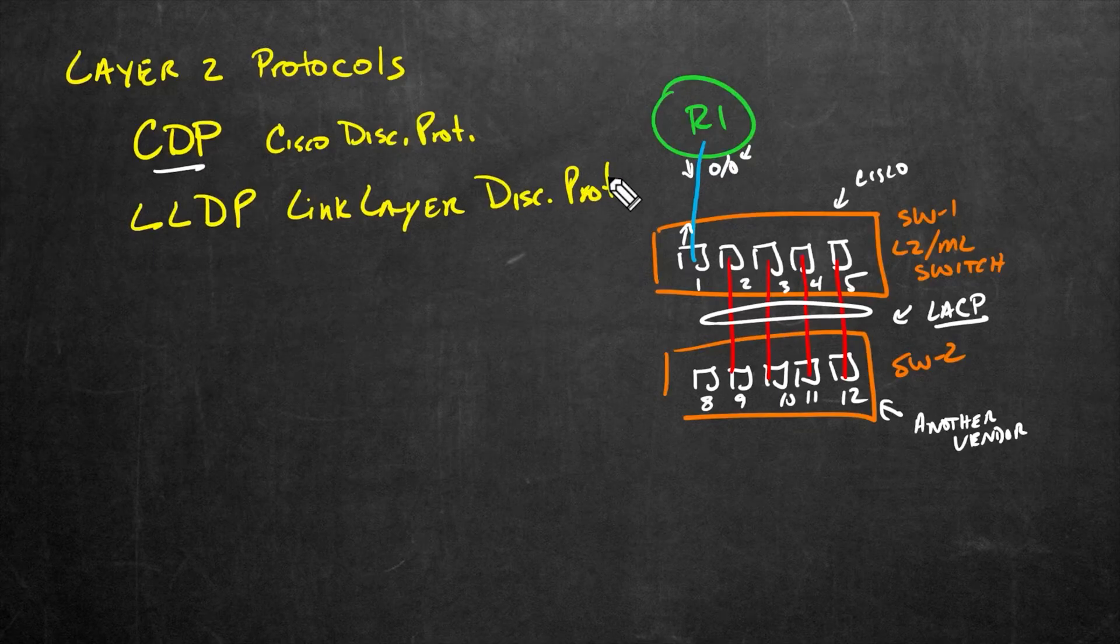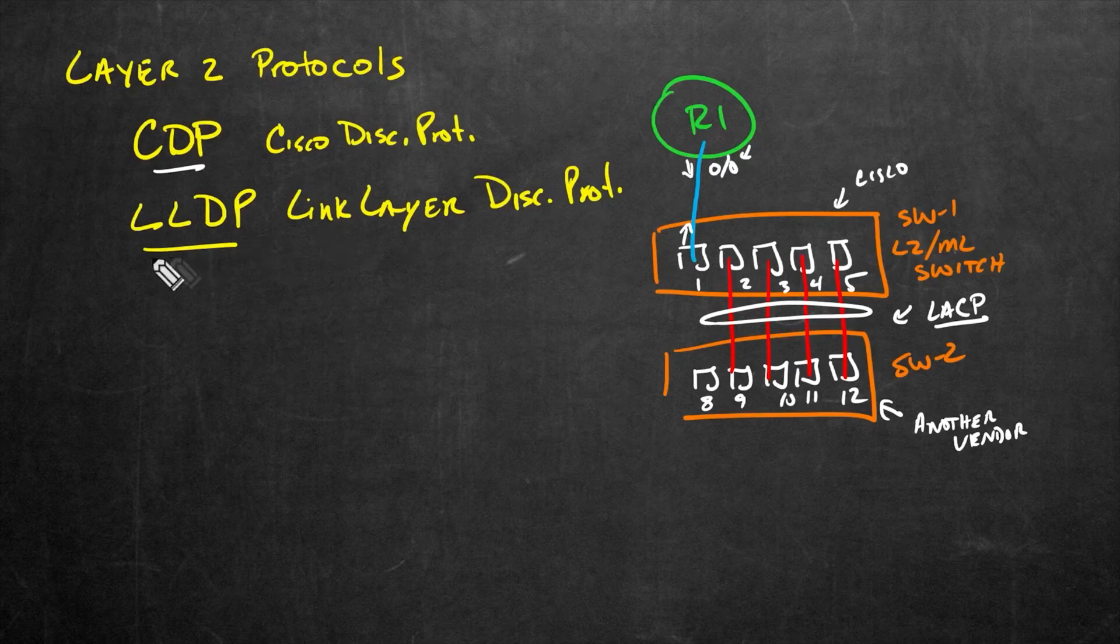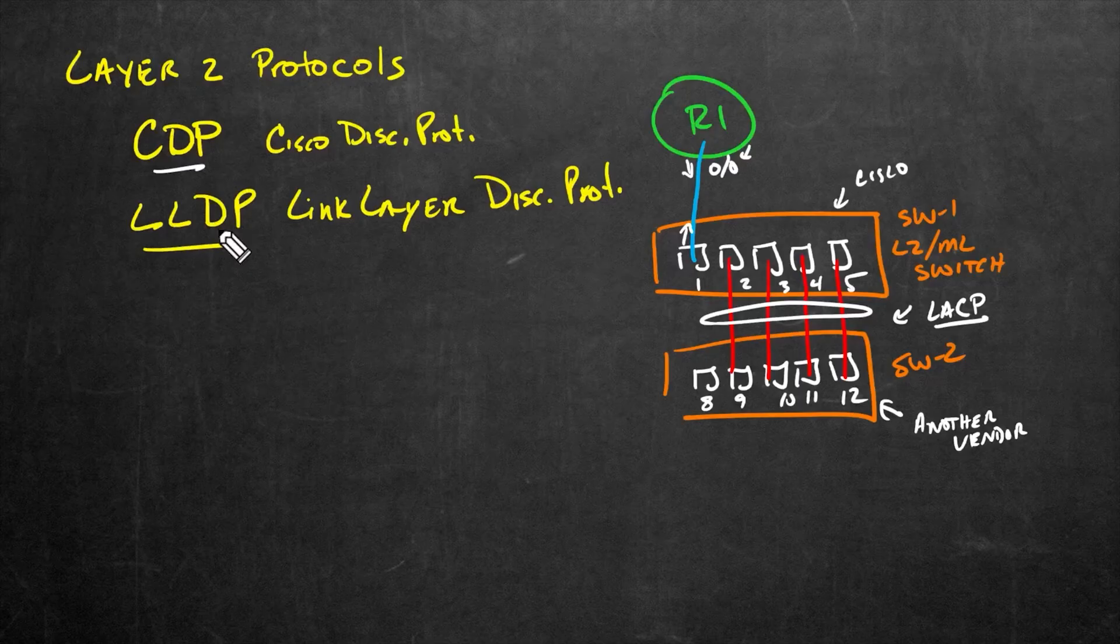And that stands for Link Layer Discovery Protocol. And fortunately, if we want to enable this layer two discovery protocol on our Cisco devices, we can, because most Cisco products not only support CDP by default, but although the default is disabled, they have the ability to enable LLDP. So we can actually do layer two discovery with other vendors and not just with other Cisco equipment.